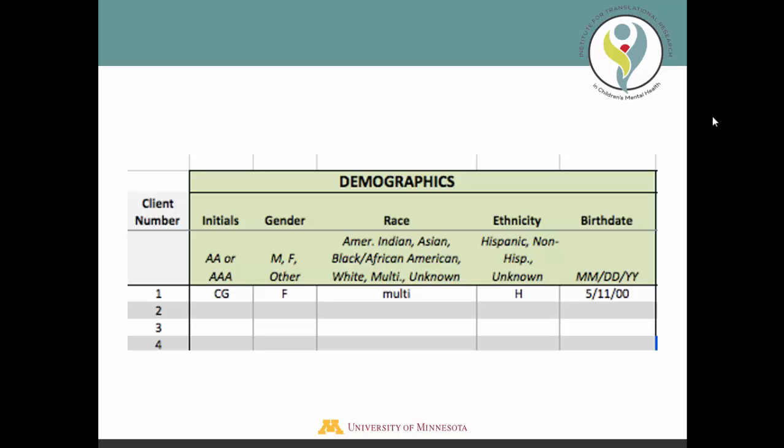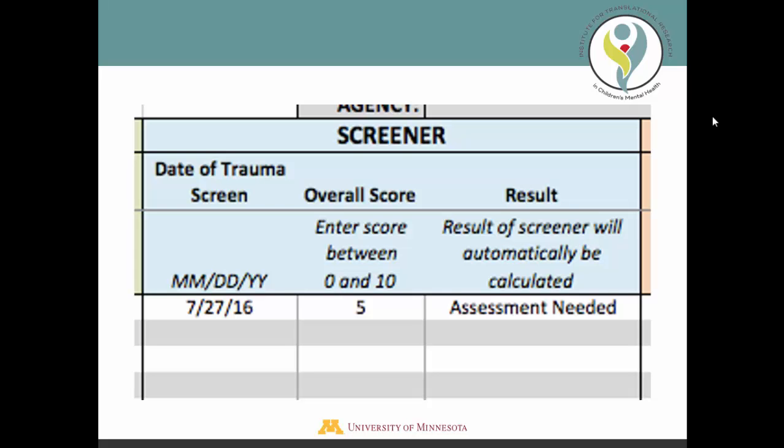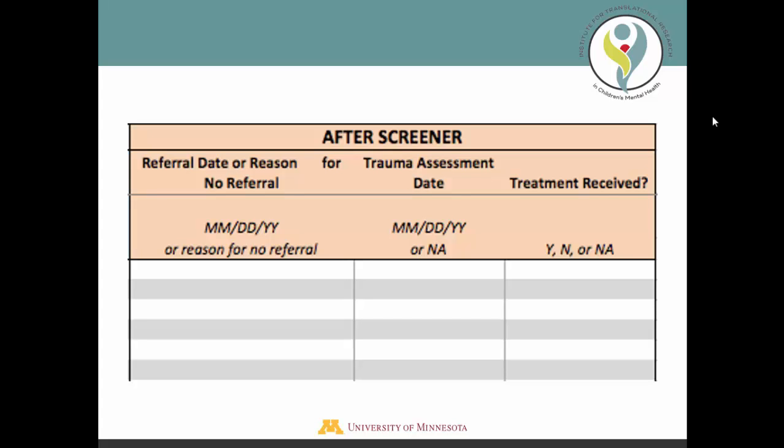The tracking form includes three sections. First is a section for basic demographic information — here we're using Christina's screen from the administration demonstration in Module 2. The next section asks about the screen results; after entering an overall score, the result will be automatically calculated. Finally, there is a space for follow-up information.